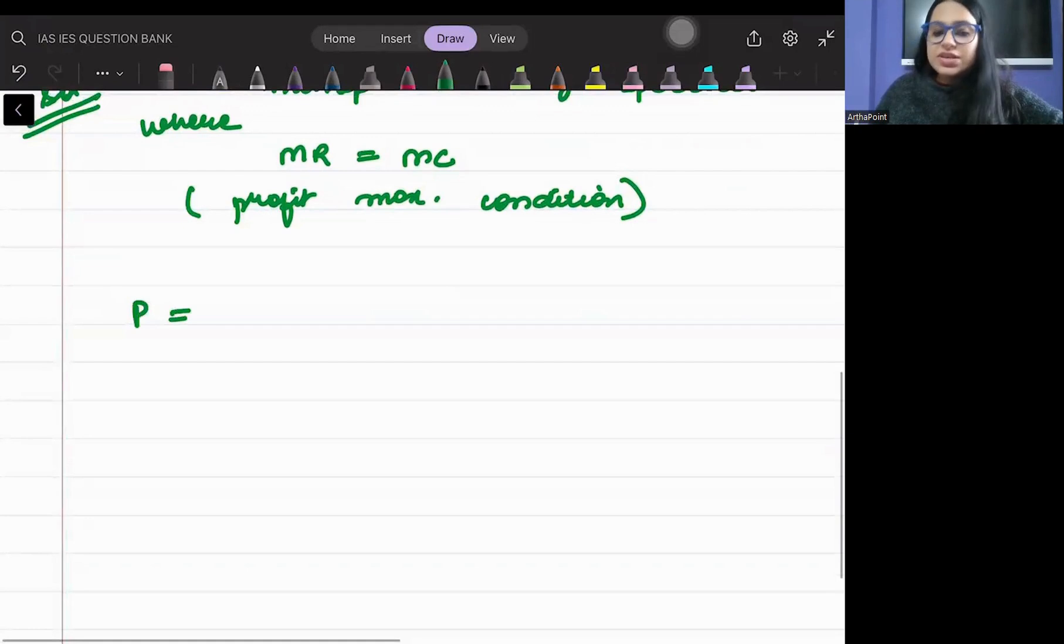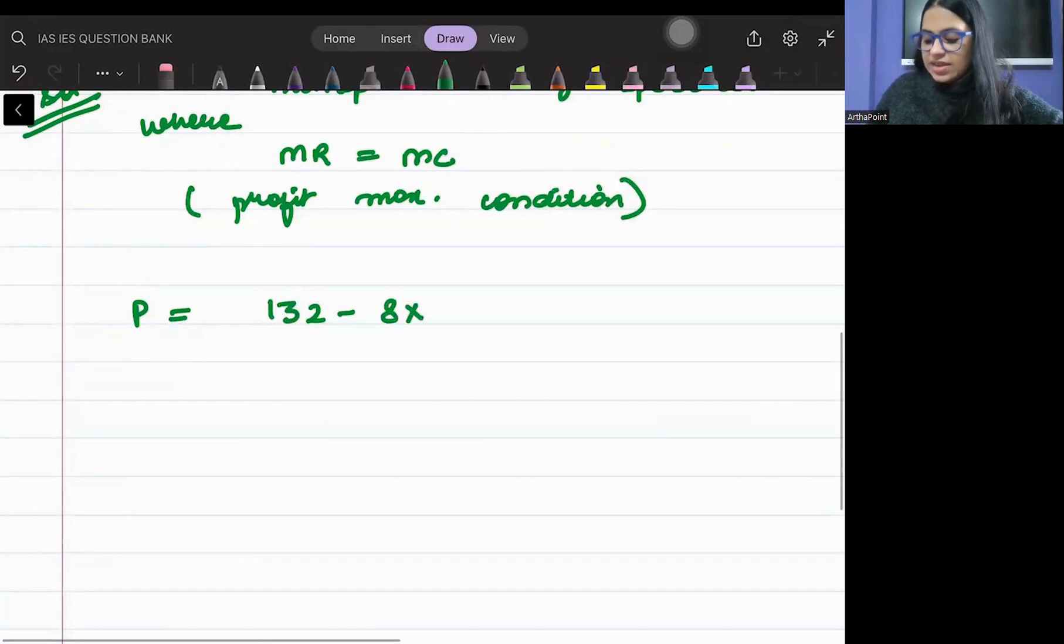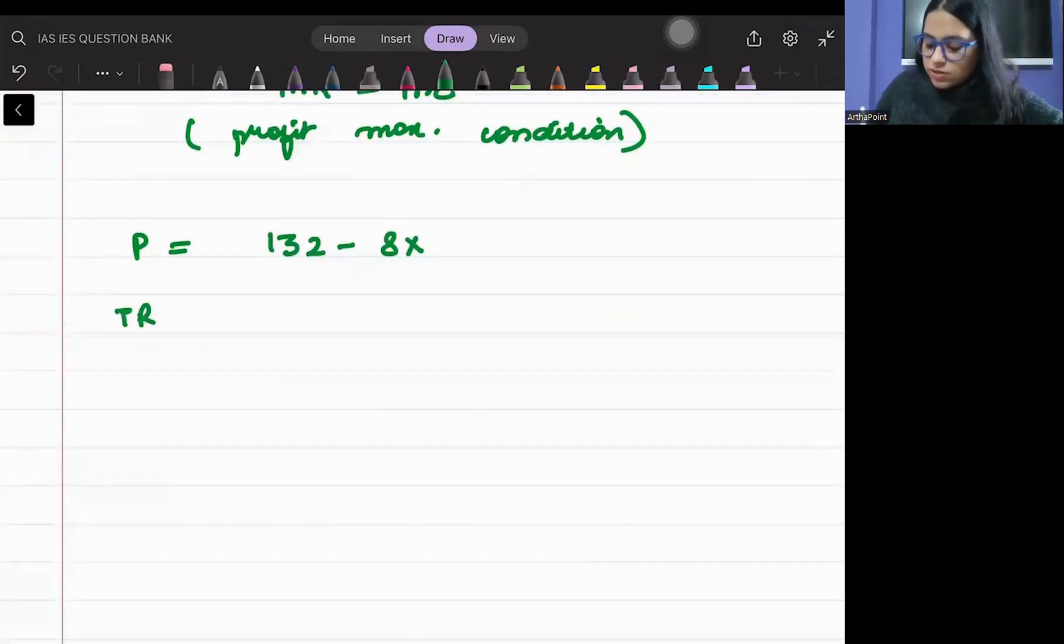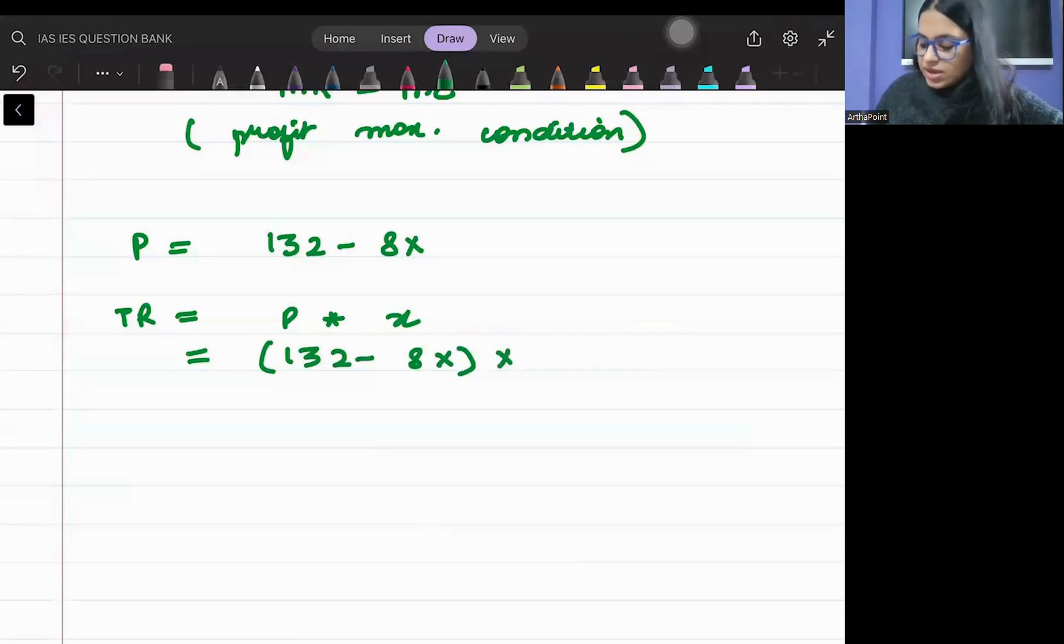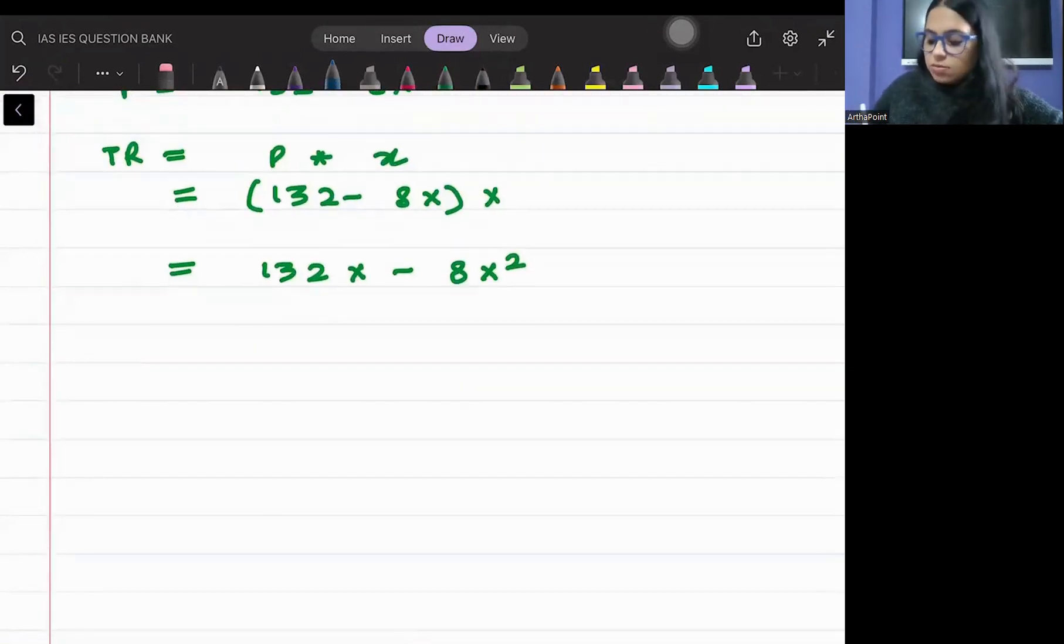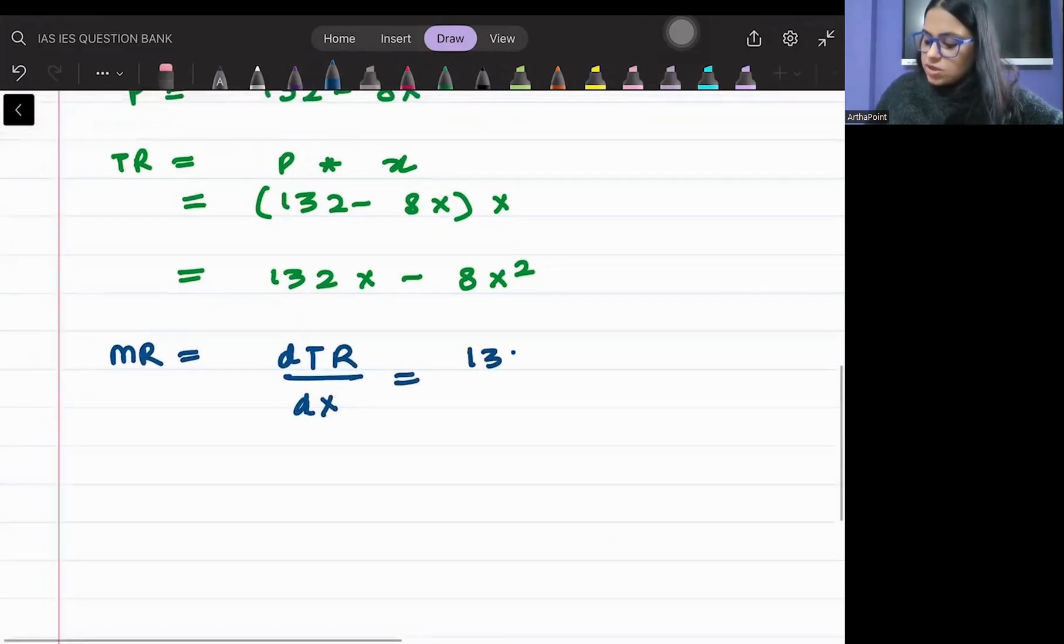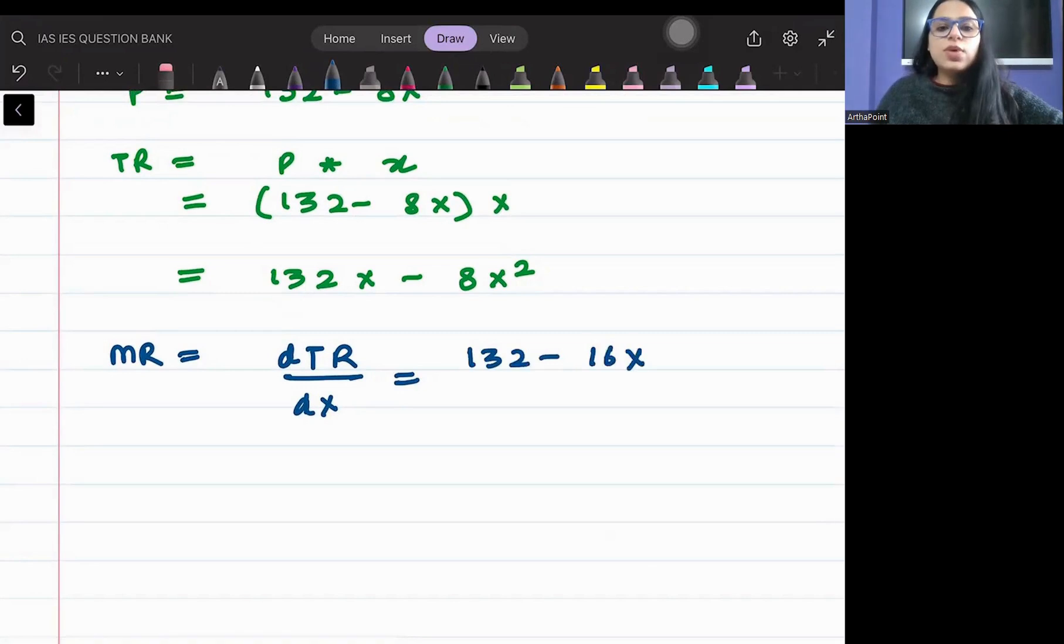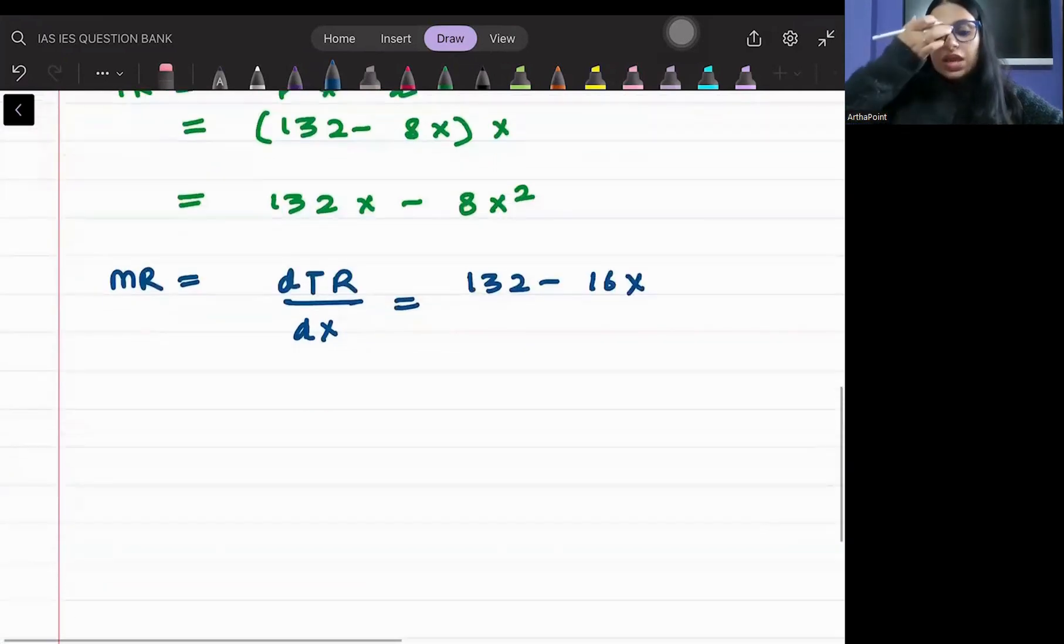Now it is given to me that price is 132 minus 8X. So what will be total revenue? It will be price into quantity. So 132 minus 8X into X, 132X minus 8X squared. So what is going to be your marginal revenue? How total revenue changes as quantity changes. So 132 minus 16X.